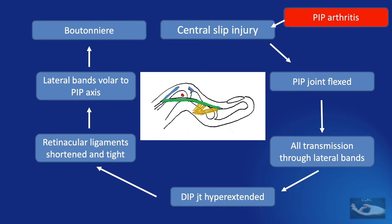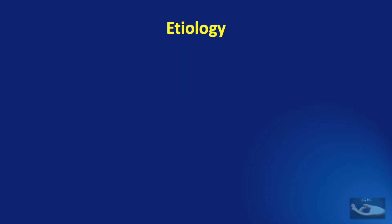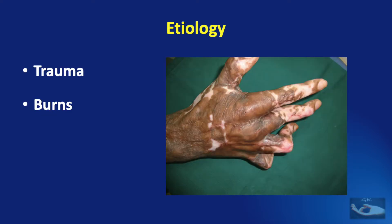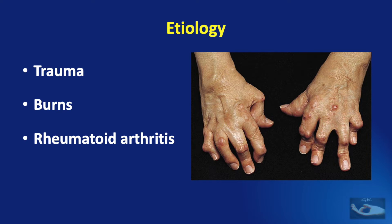The same injury to the central slip can also occur in PIP joint arthritis, as in rheumatoid arthritis. Central slip attenuation can also occur following burns of the hand, especially on the dorsal aspect. Commonly, the Boutonniere deformity can occur following trauma, burns, or rheumatoid arthritis.